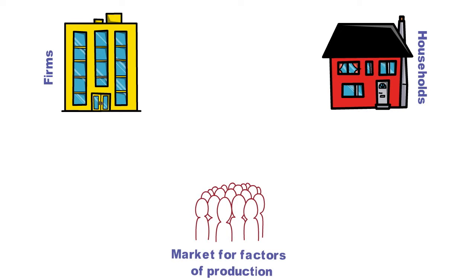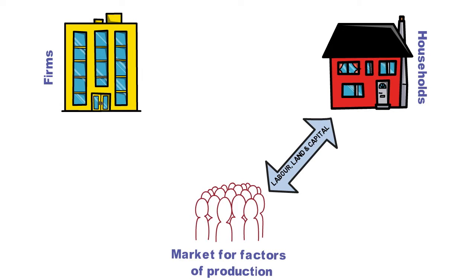In order to link those two together, we have a factor market for production. This market combines both households and firms and lets them interact. The things they interact with are labor, land, and capital — these are provided by households as the raw materials for production. Households receive an income for this, and this is one way to measure the size of an economy — the GDP level.